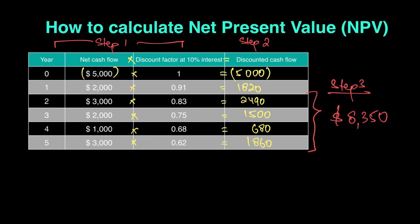That leads us to my final step, step number four. Where you take this number of $8,350 and you deduct the original cost of investment, so $5,000, which gives me a figure of 3,350.